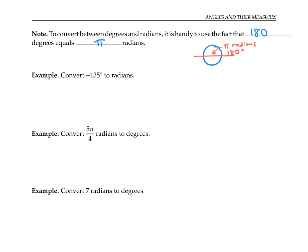Let's convert negative 135 degrees to radians. You might be wondering what a negative angle even means. By convention, if we go in the counterclockwise direction, that's considered a positive angle. And if we go in the clockwise direction, that's considered a negative angle.